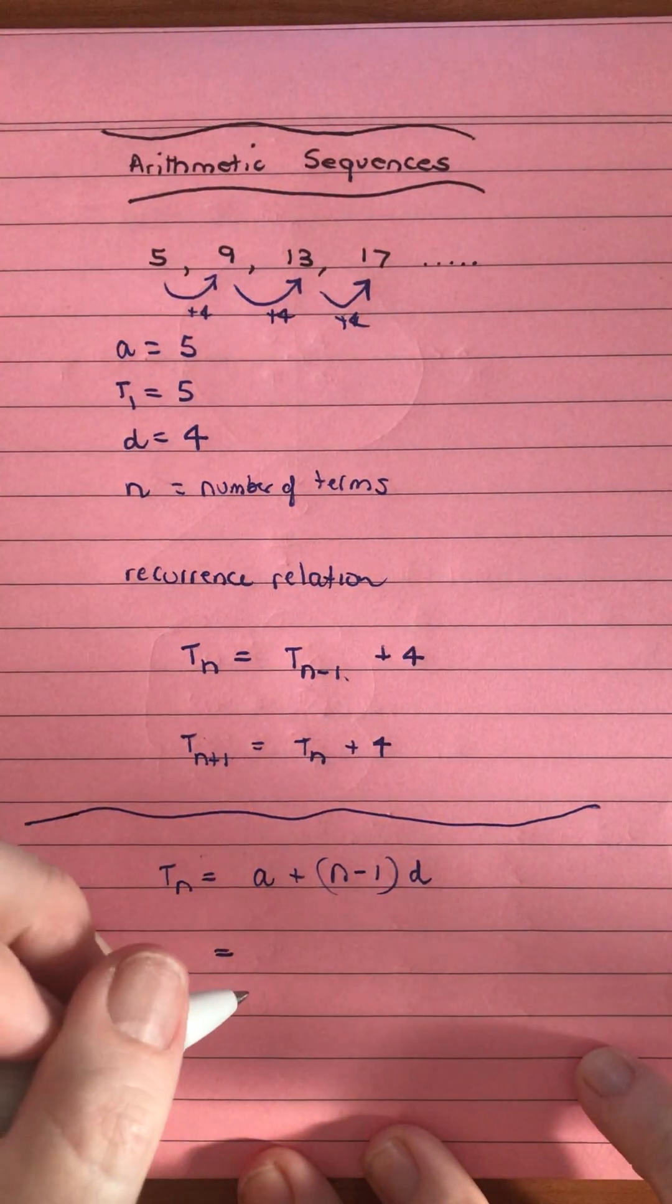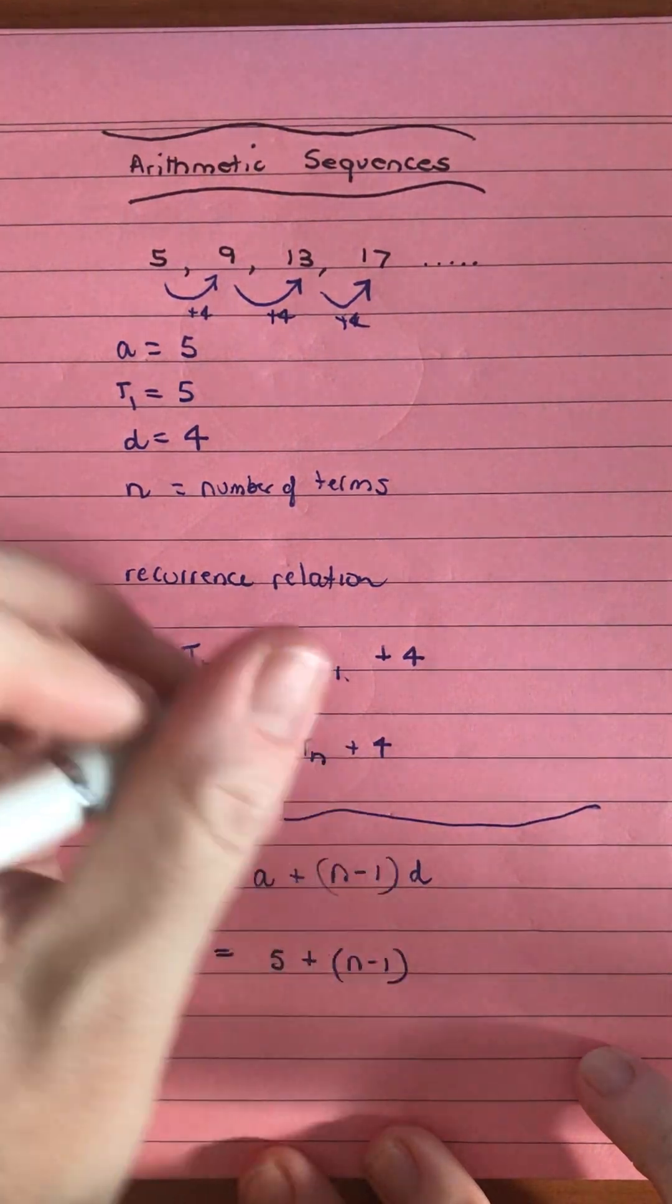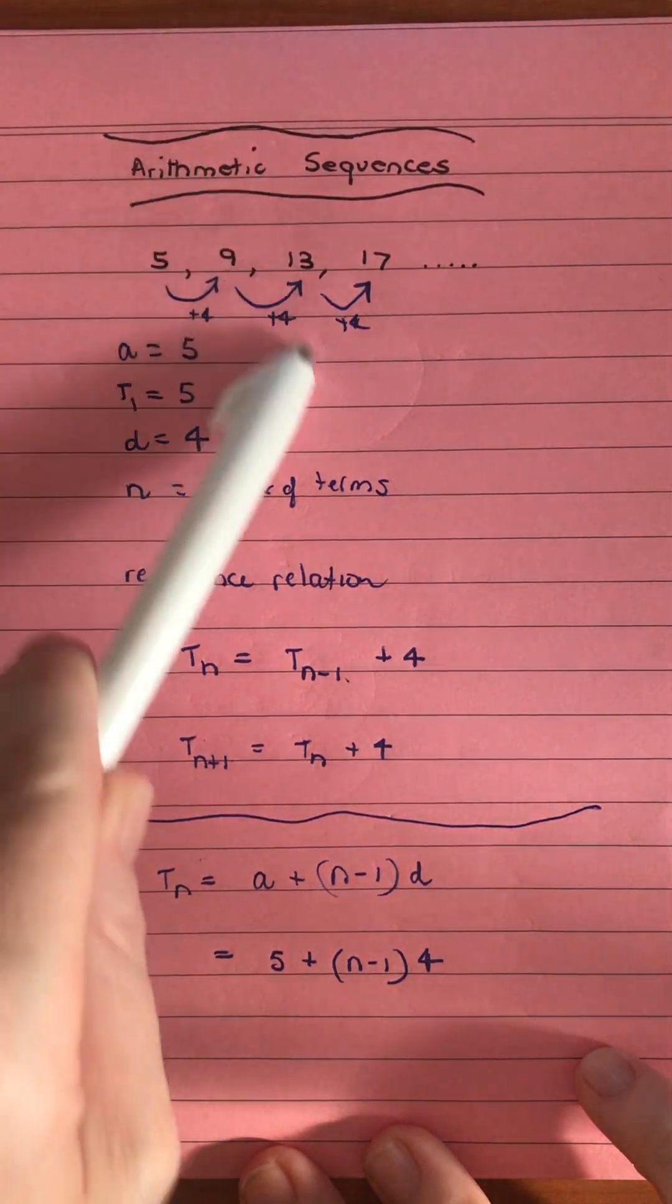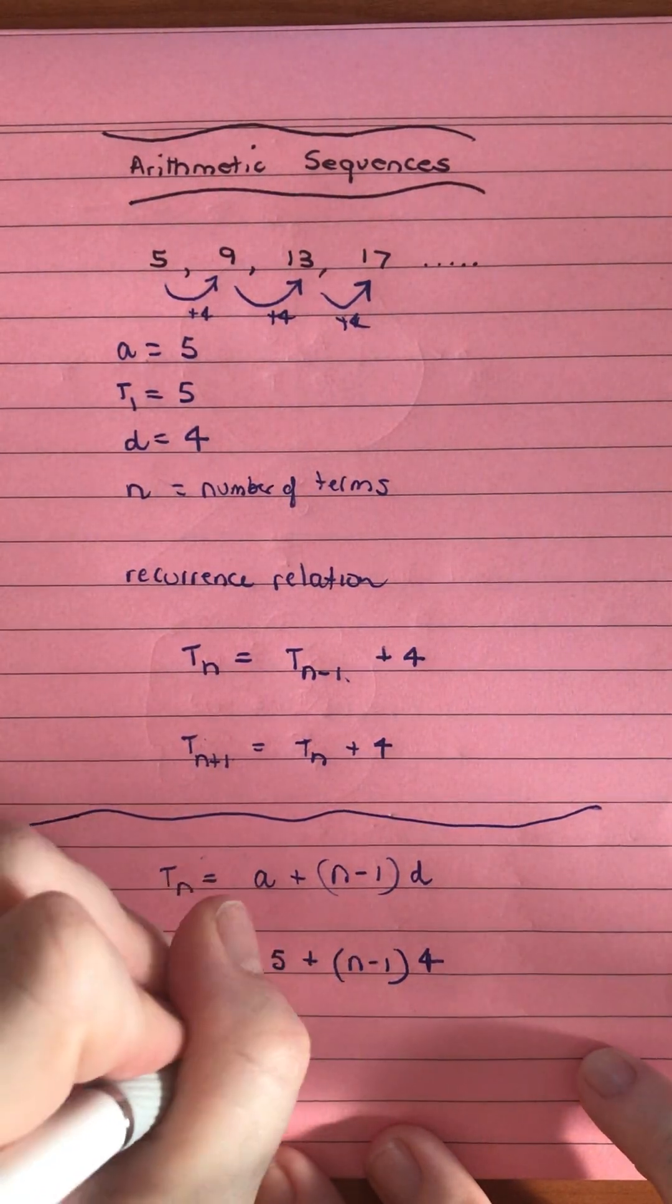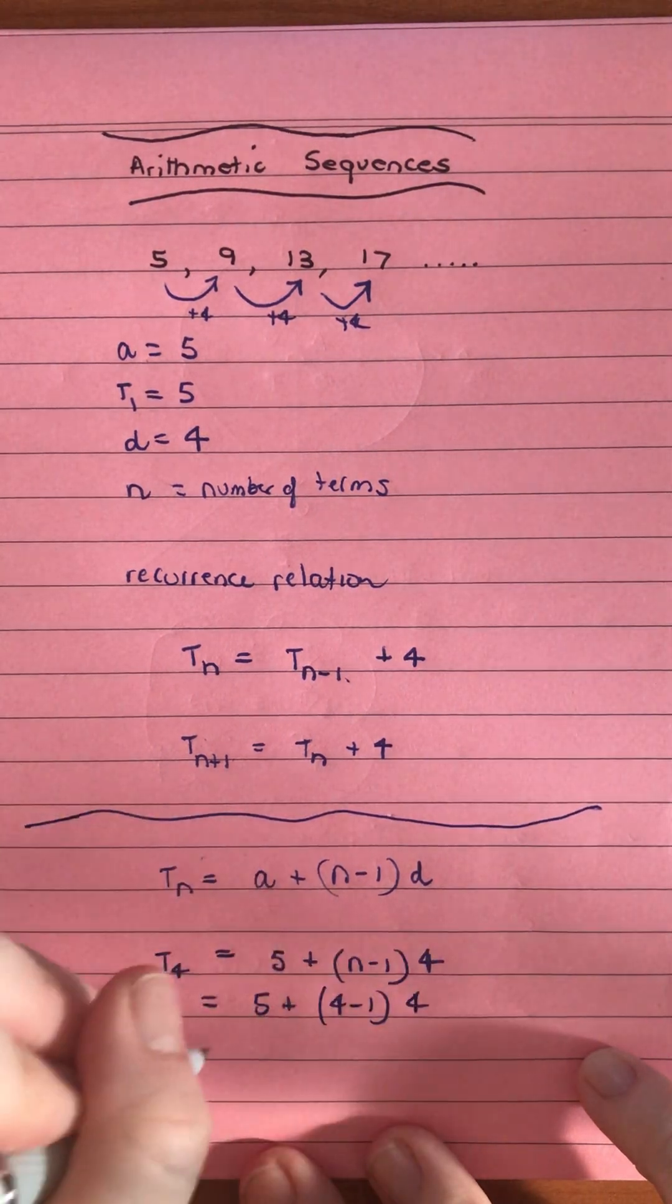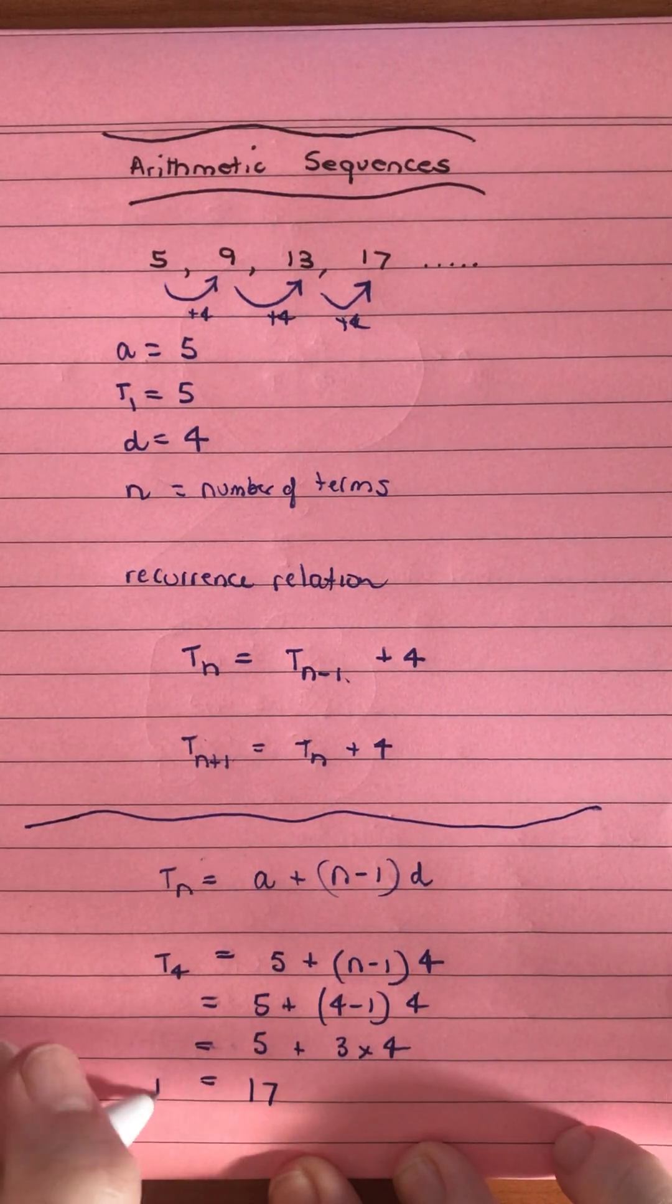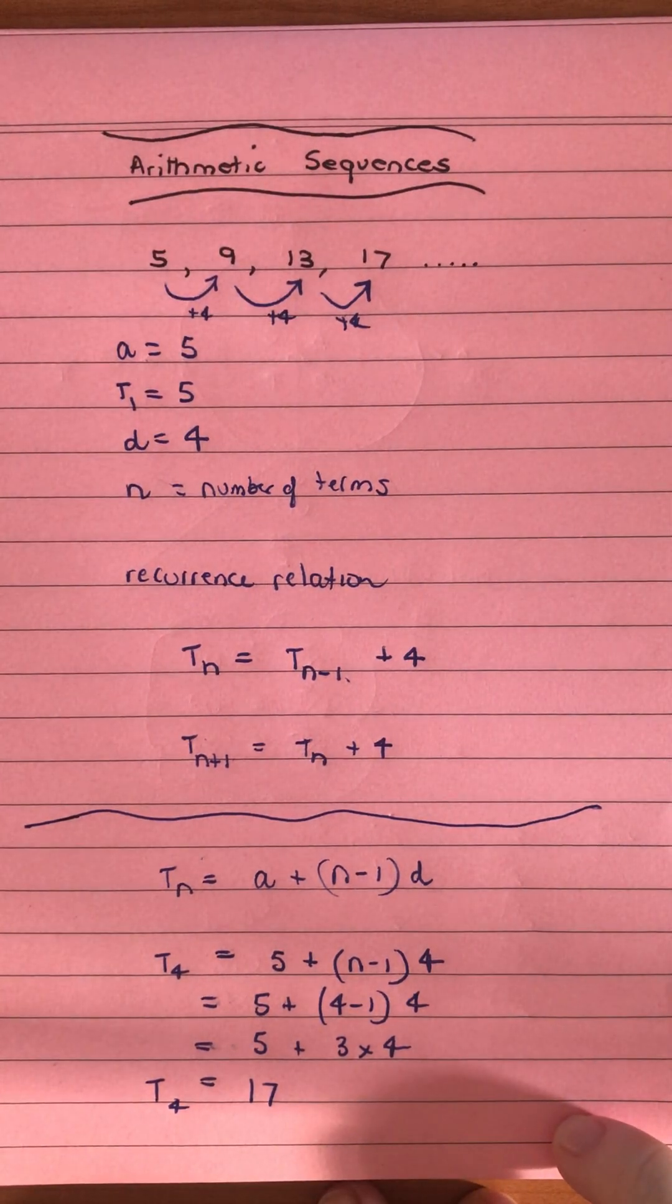In our example, we have 5 + (n-1)×4, and we can get any value in the sequence. This is T1, T2, T3, T4. We can find T4 by putting 4 in for n. So we have (4-1)×4. Four minus 1 is 3, times 4 is 12, plus 5 is 17. That's what we have as our fourth term.